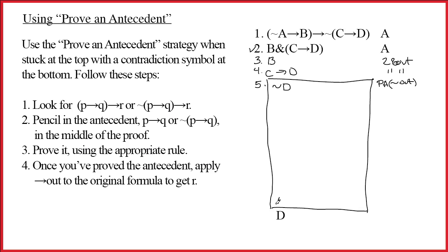Contradiction symbol at the bottom. We want to get to a logical disaster. Now we go back up to the top and see if anything's changed. Still don't have tilde A arrow B to do arrow out on line 1. Still don't have a C to do arrow out on 4. We're stuck at the top again. Time to go to the bottom. When we go to the bottom, we identify the main connective. But we see there's no main connective here at all. This is a contradiction symbol. And this is exactly why we gave ourselves the proven antecedent strategy. You should use the proven antecedent strategy when you're stuck at the top with a contradiction symbol at the bottom.